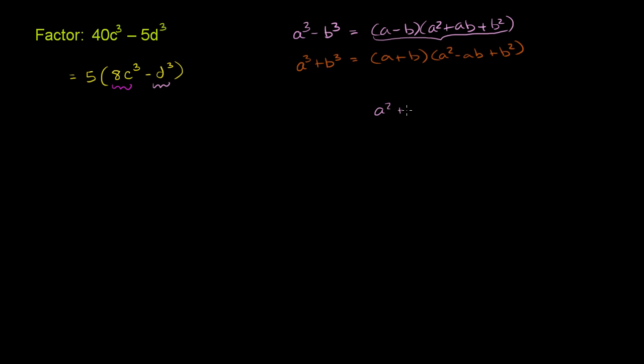You have a squared plus ab plus b squared times a to the third, sorry, times a minus b. Let's multiply it out. So first you have the negative b times all of this business up here. So we get negative b to the third minus ab squared, and then negative a squared b. So I just multiplied negative b times all of that stuff.